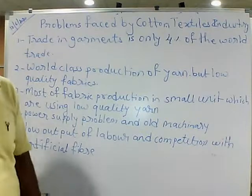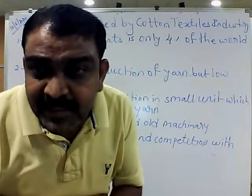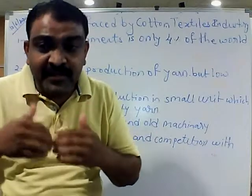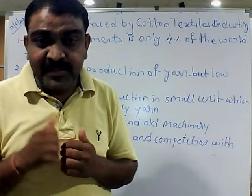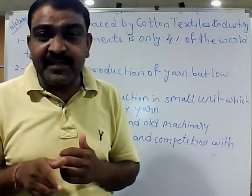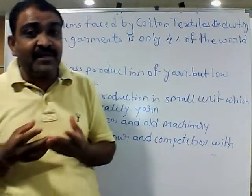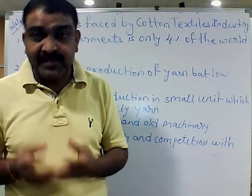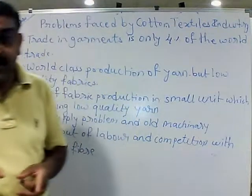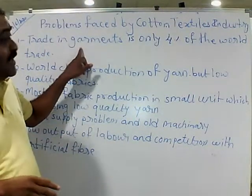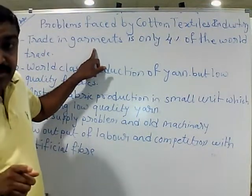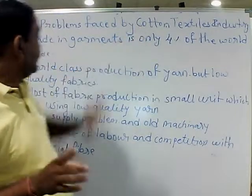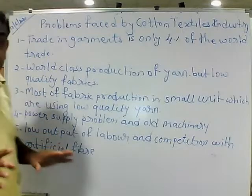Garment is the final and finished product of the cotton textile industry, and the most profit is earned when we sell the final product. Our contribution in final product selling is the least. So that is the problem. If we increase our garment trade — the sale of the final product — we will get more income. And that is where the problem of the textile industry lies: our garment trade is only 4 percent.